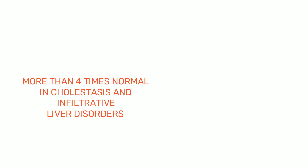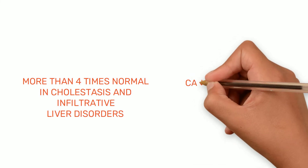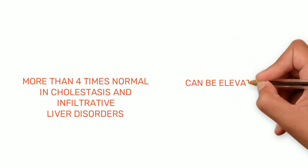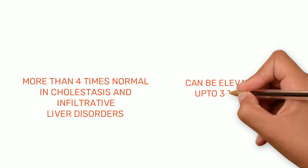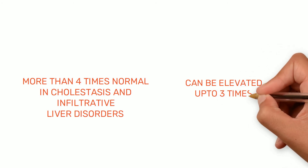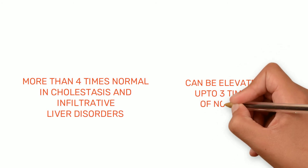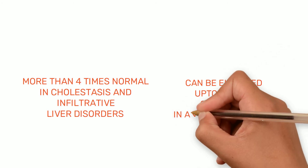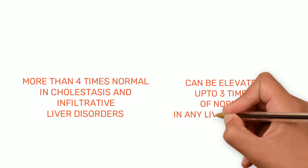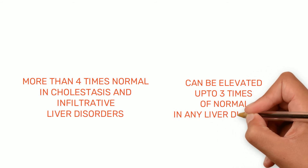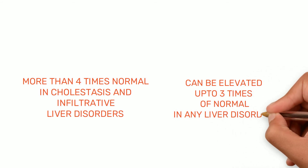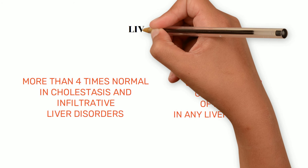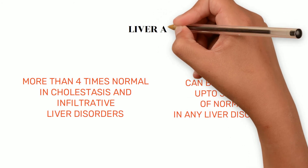Levels up to three times normal can be seen in any liver disorder, including hepatocellular injury. These two elevations are due to liver ALP.